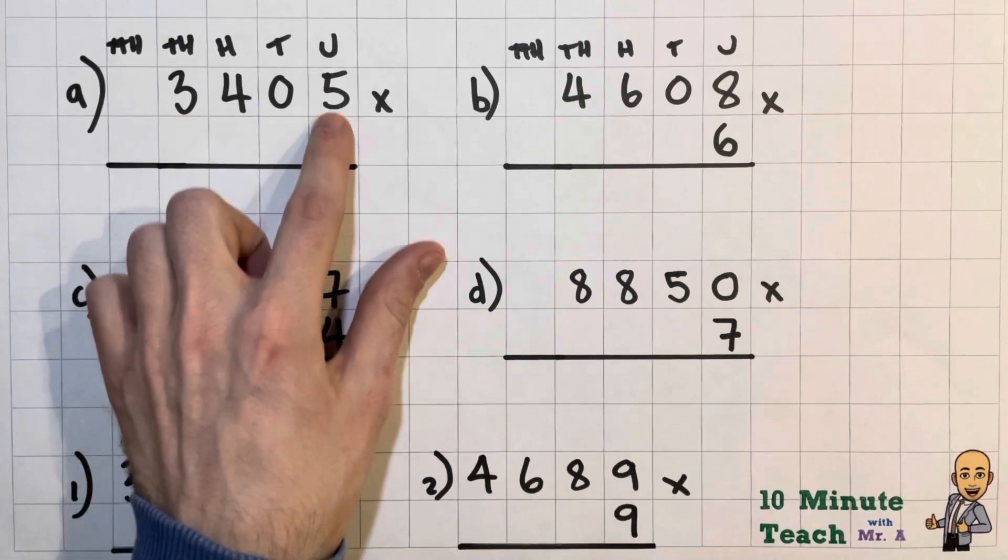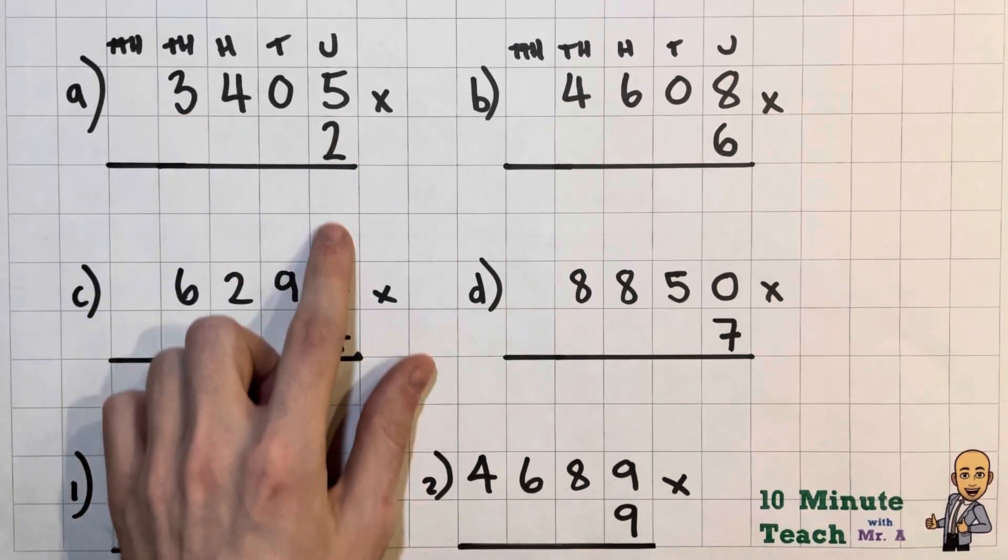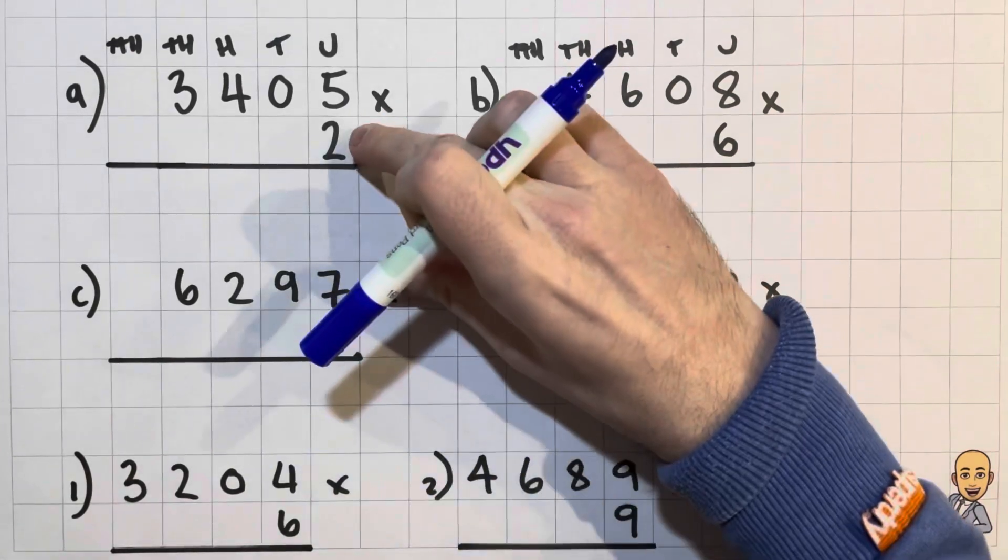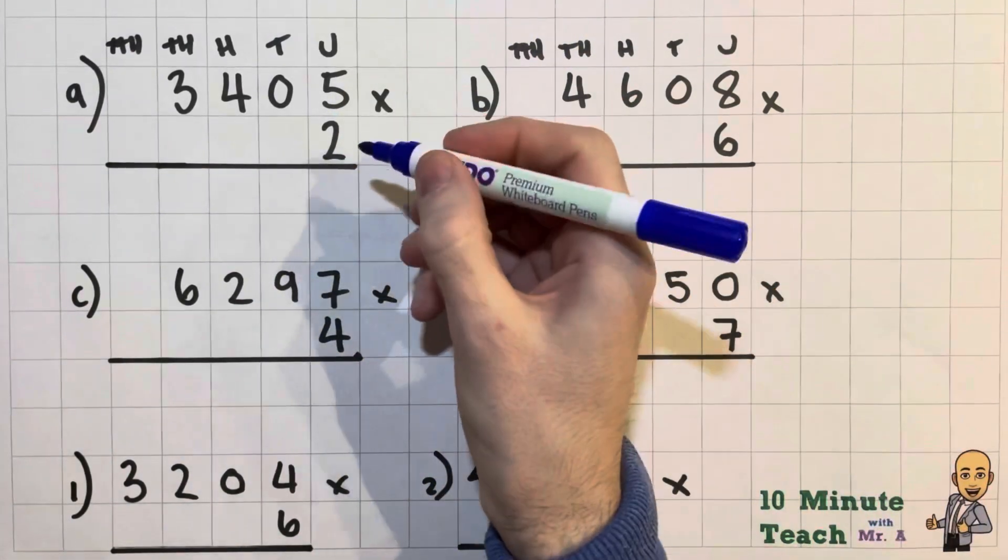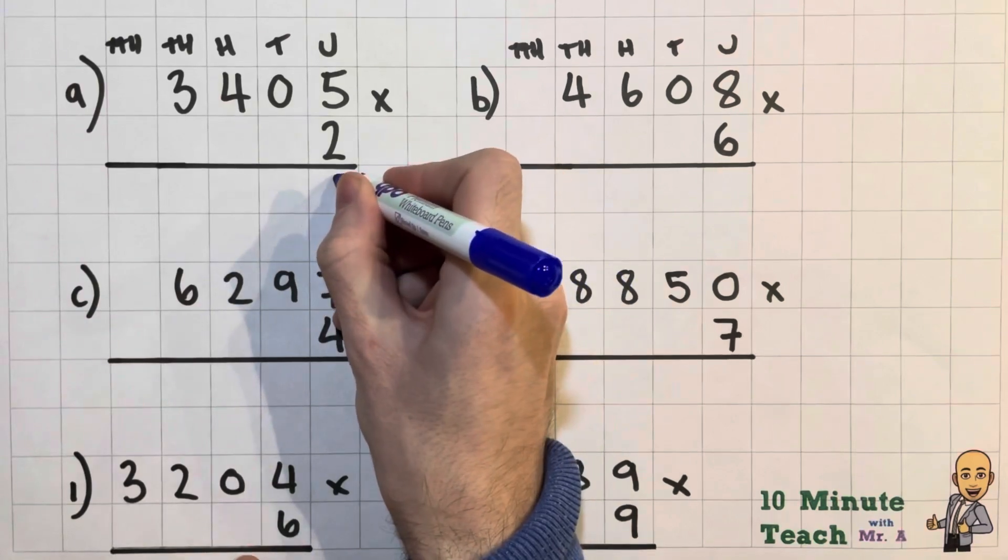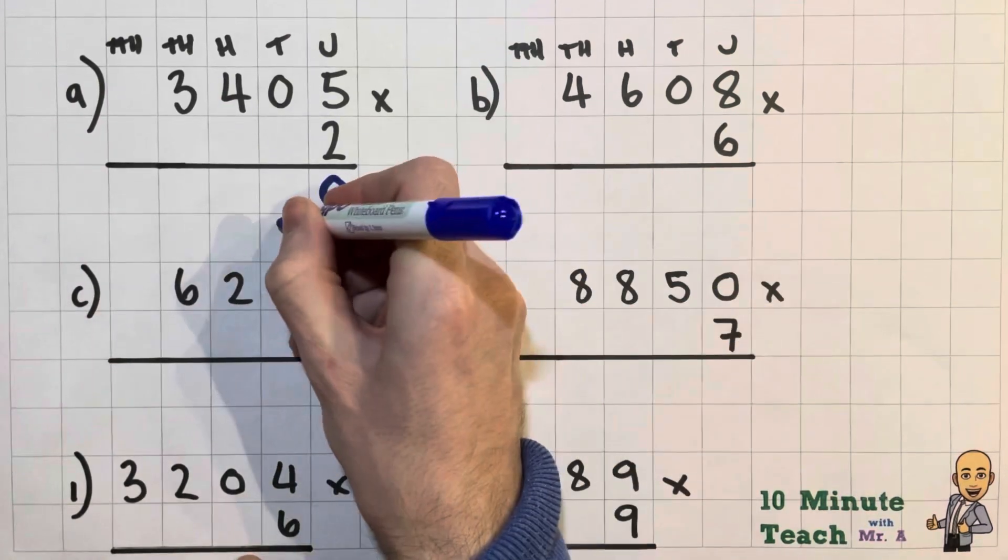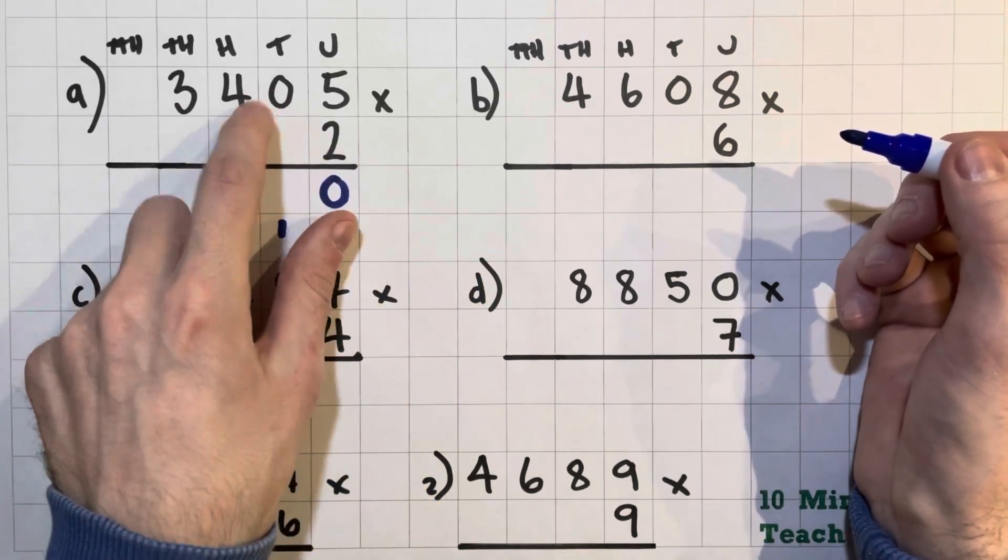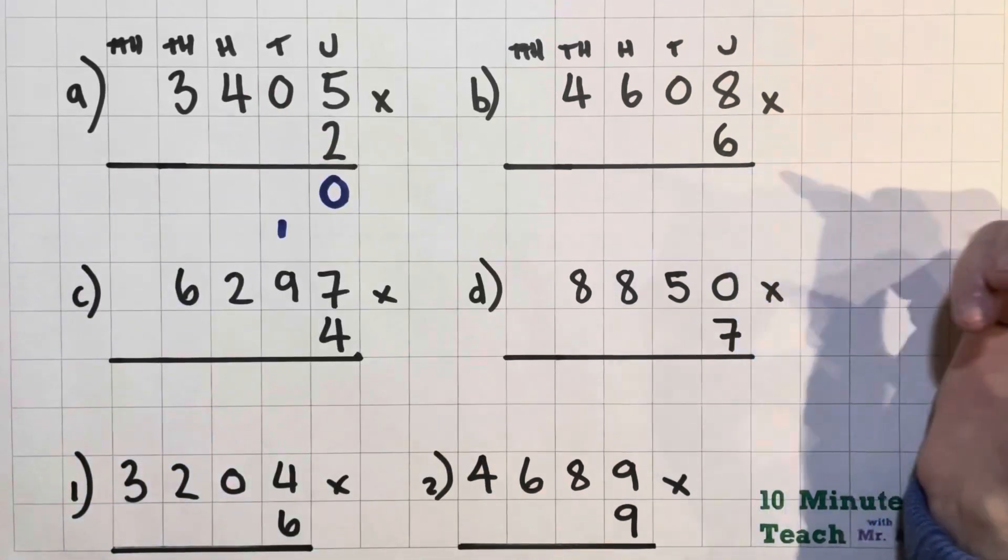Let's give it a go. First of all, 2 times 5, it's just a units number, is 10. So I'm going to put down my units and carry my 10 over. I've got 0 times 2, and if I've got no lots of 2 then I have none of it, and then I've got my 10 to put in there.